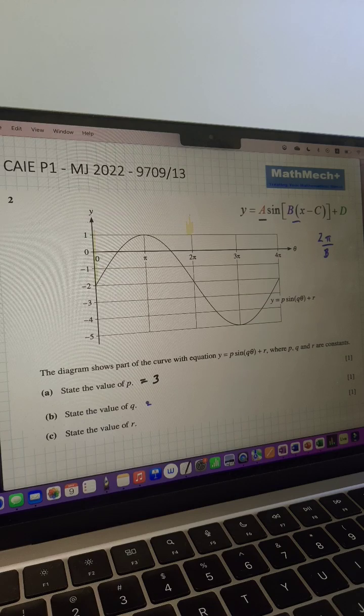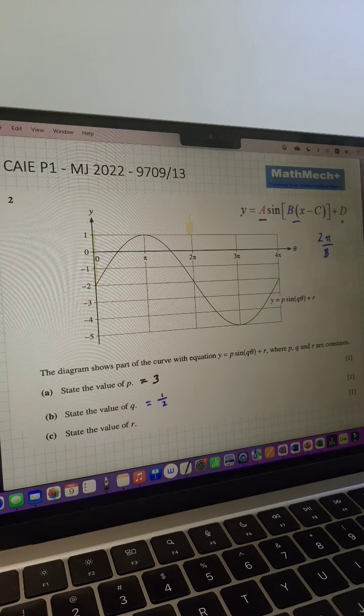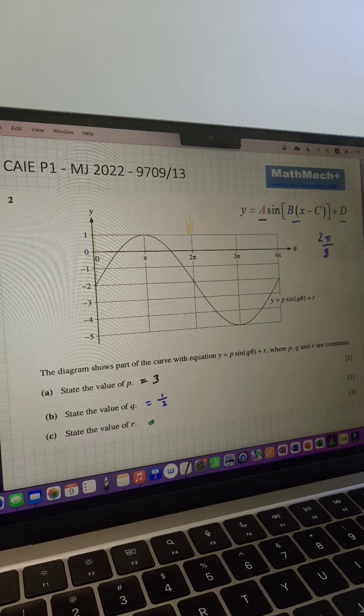The period is how does the graph repeat itself, and we know that it goes from pi to 2 pi. In this case it goes to 4 pi, so you know it's double, so the scale factor is a half. Remember that along the x-axis is a little bit more different.